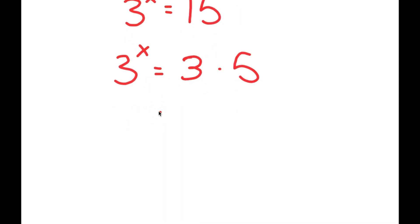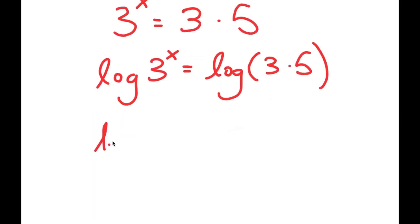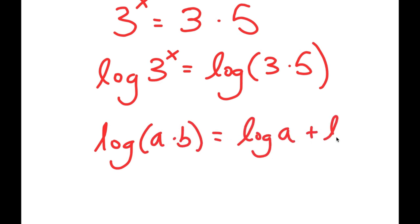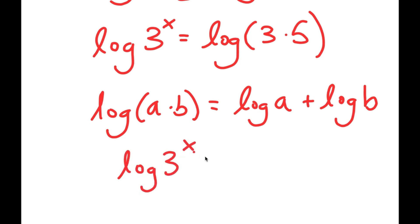Now, I'm going to take the log on both sides. So I get log of 3 to the power of x is equal to log of 3 times 5. And if I have something in the form log a times b, this is equal to log a plus log b. So log of 3 to the power of x is equal to log of 3 plus log 5.